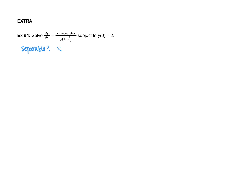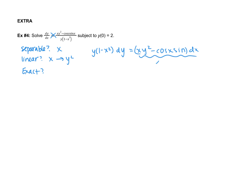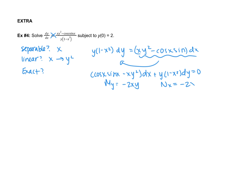Starting the same way we did before: is this separable? No. Is it linear? No — there's a y squared. Is it exact? It's a little hard to tell because of the way it's written, so I'm going to rewrite. Cross-multiplying gives y(1 − x²)dy = (xy² − cos(x)sin(x))dx. Moving that term to the left side and reversing the order gives us the equation in standard form. Now we can decide if this is exact: the partial with respect to y is −2xy, and the partial with respect to x is also −2xy. So yes, it is.